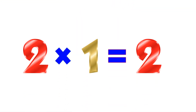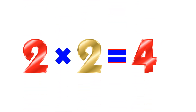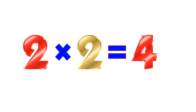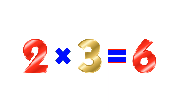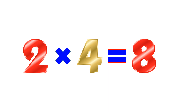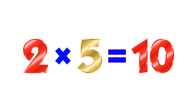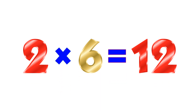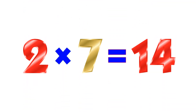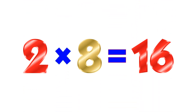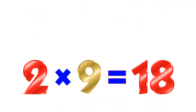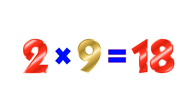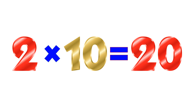Table of 2. 2×1=2. 2×2=4. 2×3=6. 2×4=8. 2×5=10. 2×6=12. 2×7=14. 2×8=16. 2×9=18. 2×10=20.